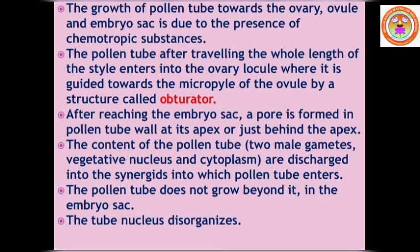The growth of the pollen tube towards the ovary, ovule, and embryo sac is due to the presence of chemotropic substances. The synergids contain a filiform apparatus, and they secrete chemical substances that attract the pollen tube, guiding it toward the embryo sac.